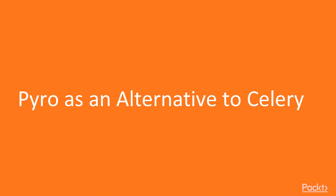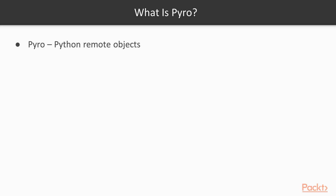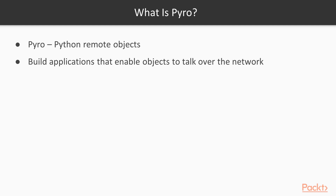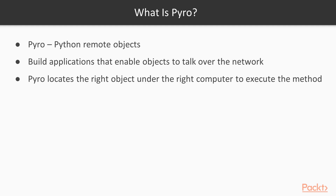Welcome to the video: Pyro as an alternative. In this video we are going to introduce Pyro — we'll find out what Pyro is, what its features are, and what it can be used for, and we will see how to install it. Pyro stands for Python Remote Objects. Pyro is a library that enables you to build applications in which objects can talk to each other over the network with minimal programming effort. You can use normal Python method calls with almost every possible parameter and return value type, and Pyro takes care of locating the right object on the right computer to execute the method.